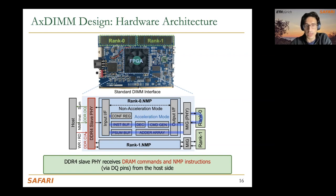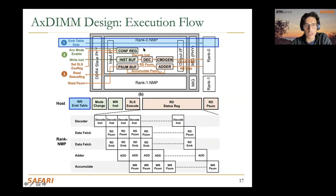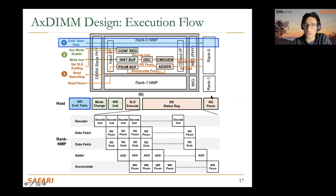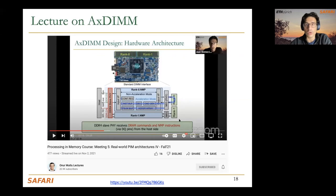The accelerator also has a command generator that sends commands to memory to access data from the rank or from the PSM buffer, and an array that implements the necessary functionality. The application demonstrated is a specific function of recommendation systems called SLS — highly memory-intensive with simple computations. The execution flow involves preparing embedding tables in memory, launching execution on the memory side with a pipeline of decoding, reading operands, adding, and writing, until the CPU detects completion. You can review the AXDiMM lecture at meeting 5.